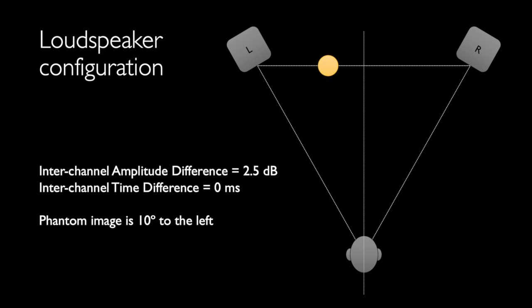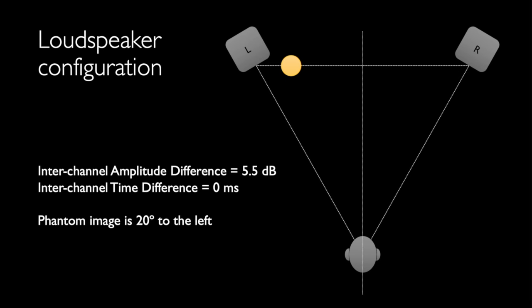Interchannel amplitude panning 10 degrees left: the left channel is 2.5 decibels louder than the right, interchannel time difference is zero. The image should appear 10 degrees to the left of center, or one-third of the distance to the left loudspeaker. Interchannel amplitude panning 20 degrees left: the left channel is 5.5 decibels louder than the right, interchannel time difference zero. Image should appear 20 degrees left, or two-thirds of the distance to the left loudspeaker. Interchannel amplitude panning 30 degrees left: the left channel is 15 decibels louder than the right, interchannel time difference zero. Image should appear at 30 degrees left, in the left loudspeaker.